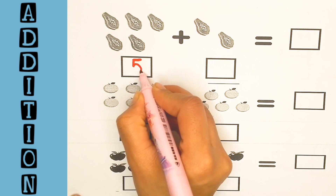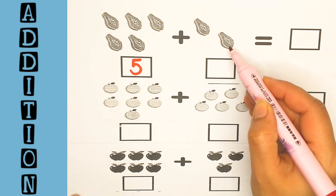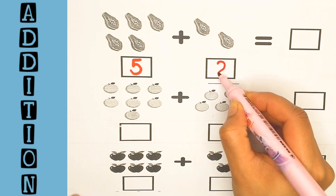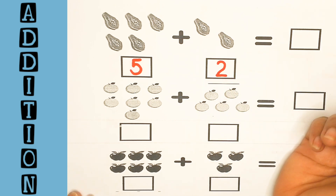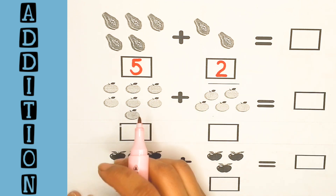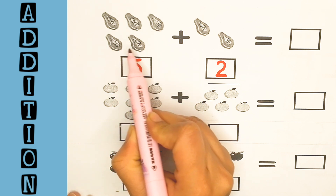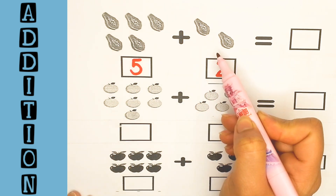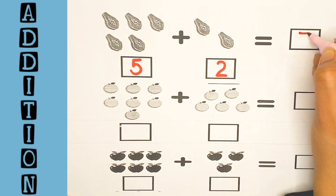And one, two — here are two pairs. Write the number two. Now we will count all the number of pairs: one, two, three, four, five, six, seven. The total number of pairs is seven.